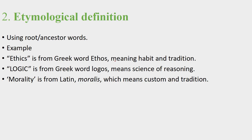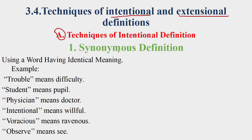Intentional definition is a synonymous definition. A synonymous definition is a method. Intentional definition is an attribute, an acronym, and an extension demo.